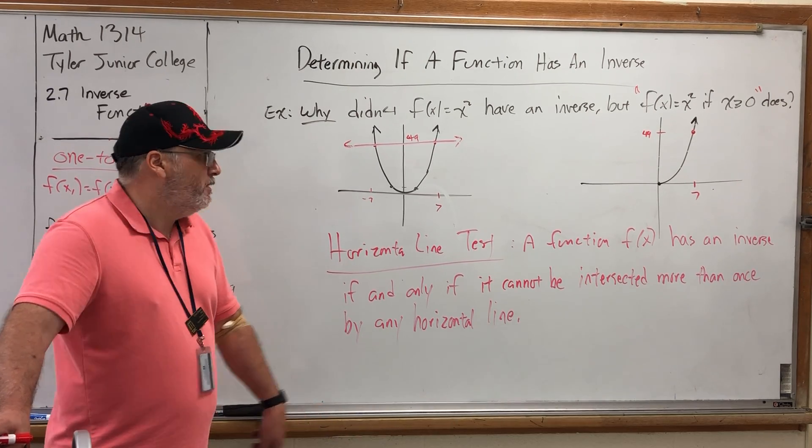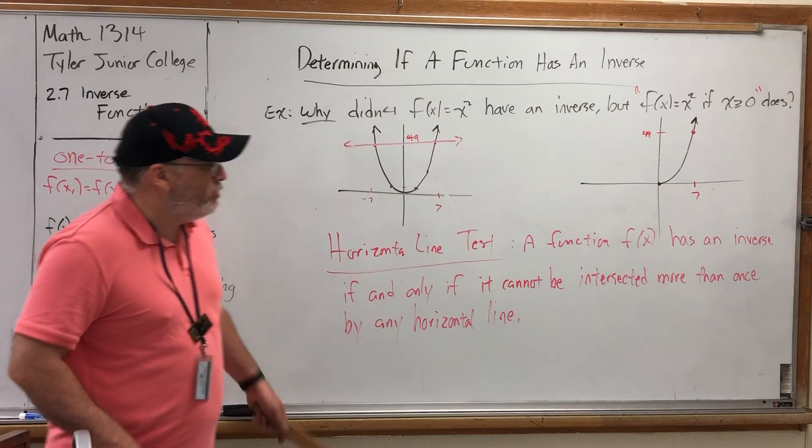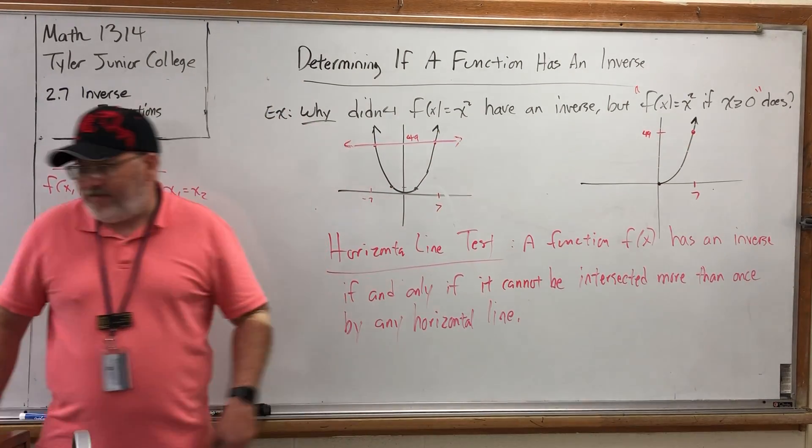So the horizontal line test is the easiest way to answer the question, do you have an inverse? Assuming you have access to the graph. Cross it twice, the answer is no, you don't. Cross it once, the answer is yes, you do have an inverse.